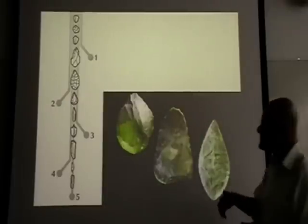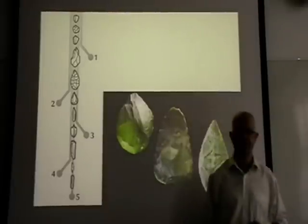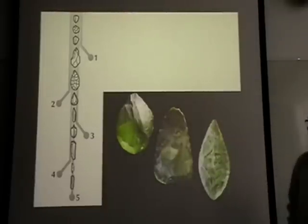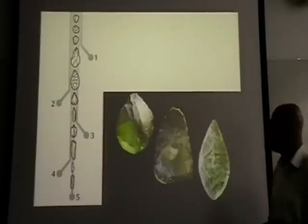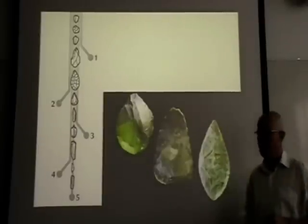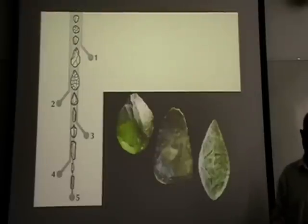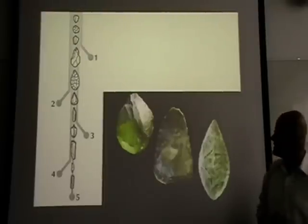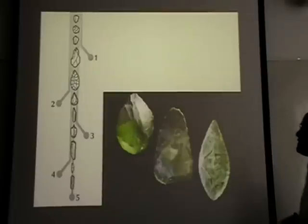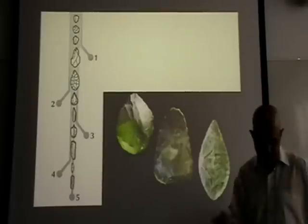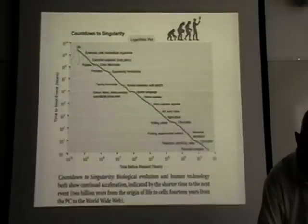And end up with things called microliths. And they represent ever more efficient ways of cutting edge out of a particular weight of lithic, particularly flint, chert, and other stones are used as well. And I'll talk a little more about that later.